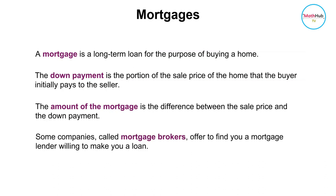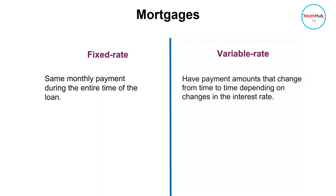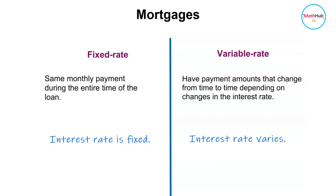Fixed-rate mortgages have the same monthly payment during the entire time of the loan. There are also what we call variable-rate mortgages, also known as adjustable-rate mortgages or ARMs, which have payment amounts that change from time to time depending on changes in the interest rates. So for fixed-rate mortgages the interest is fixed, while for variable-rate mortgages the interest varies and changes from time to time.